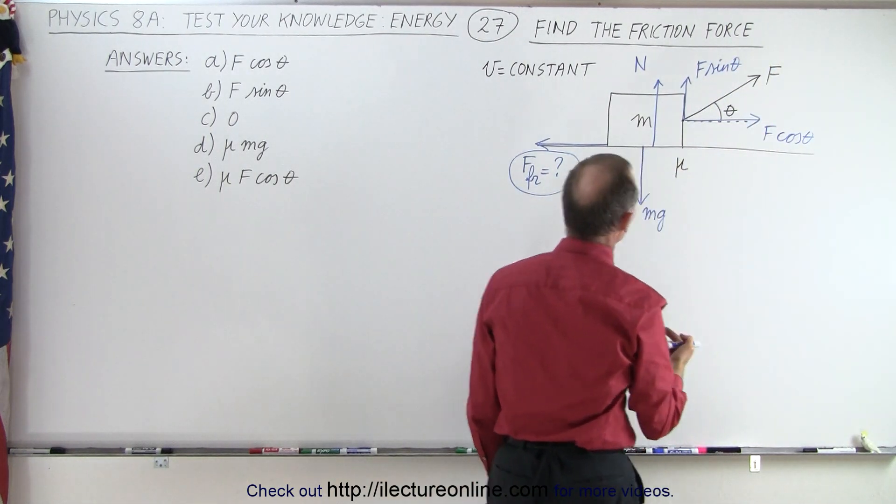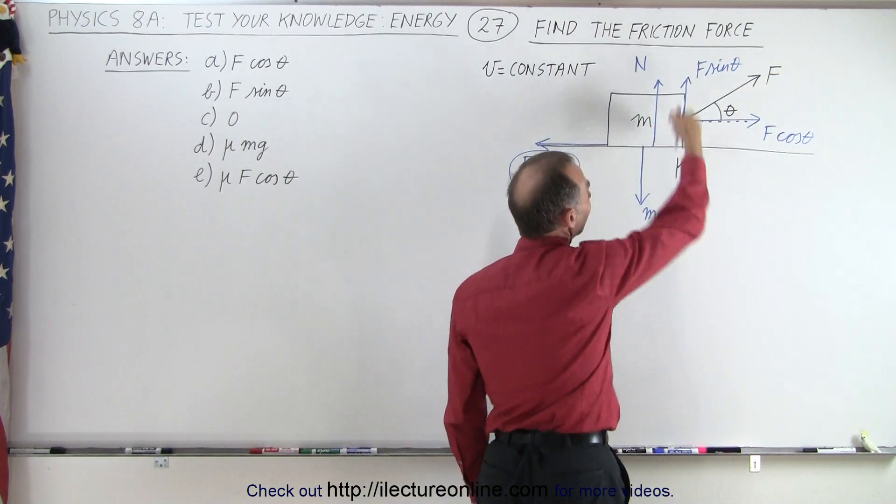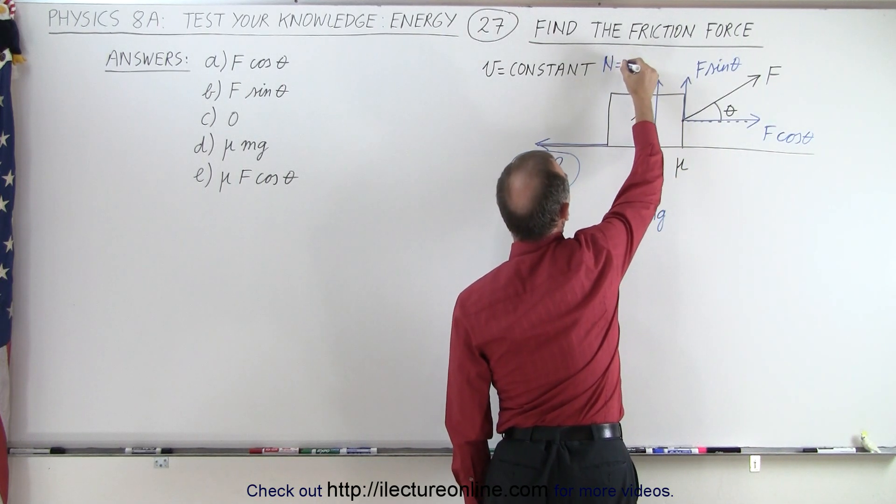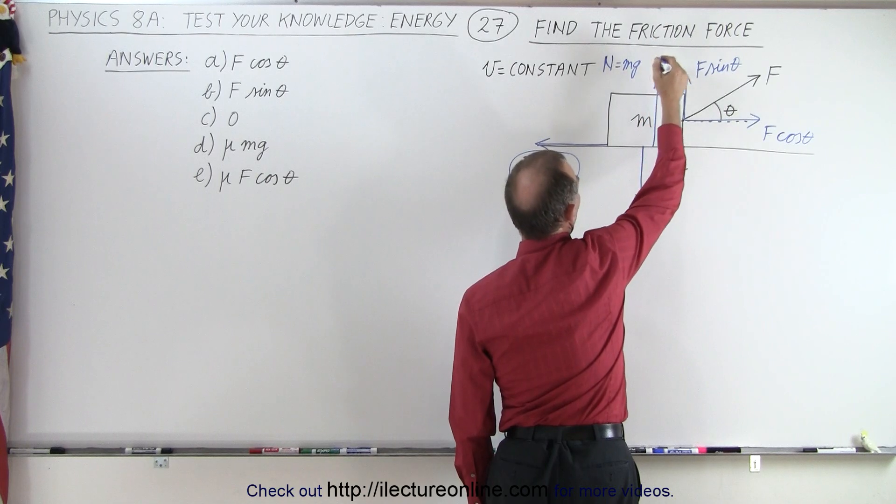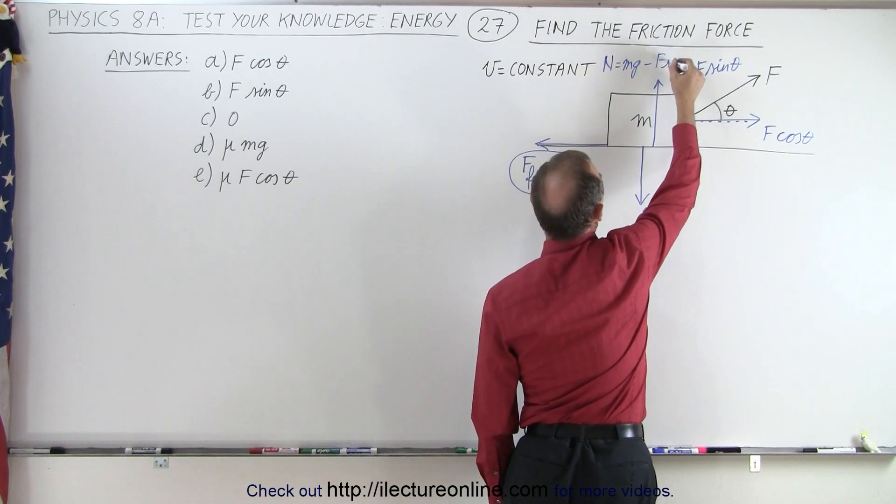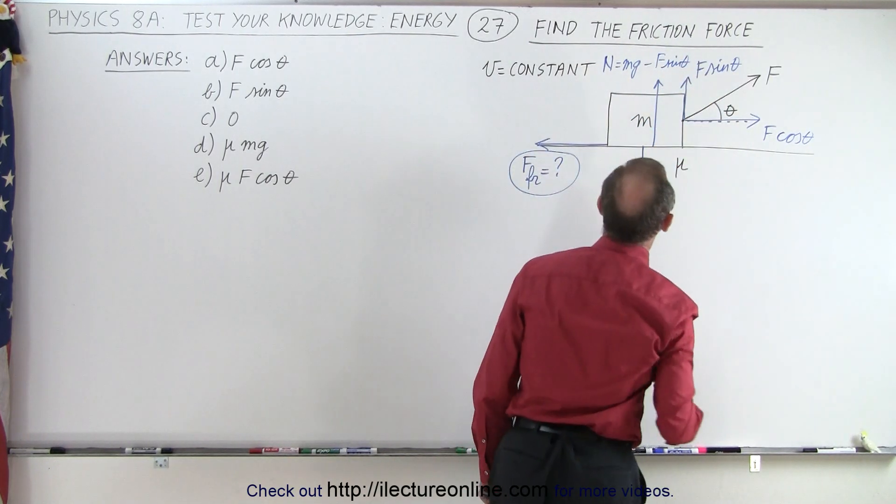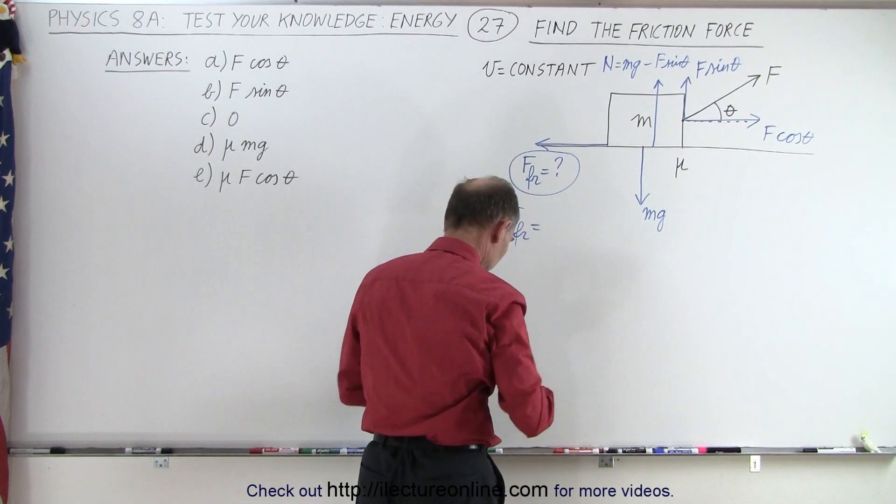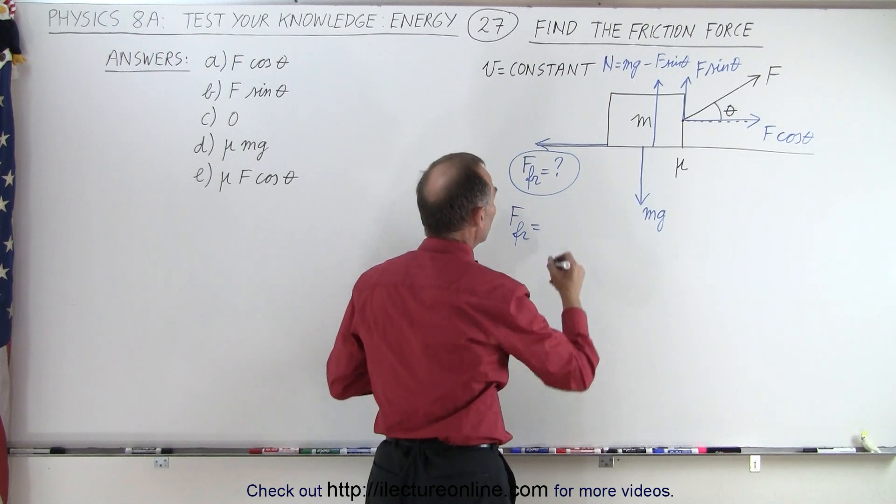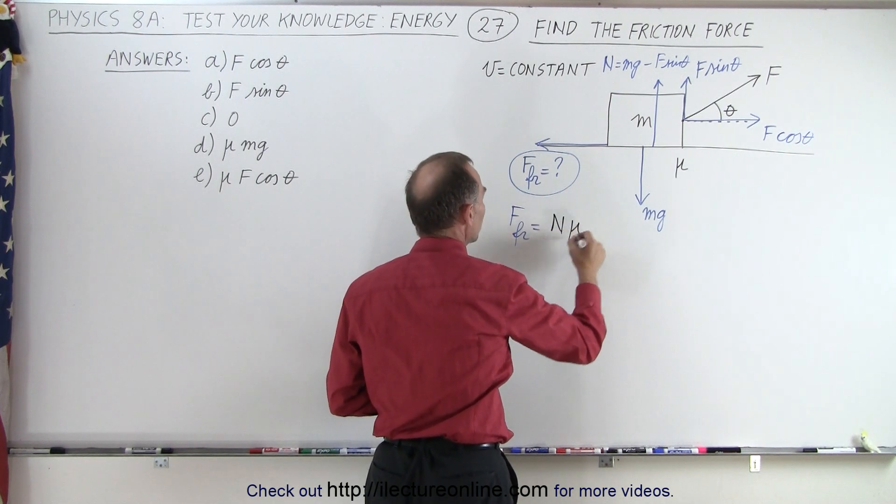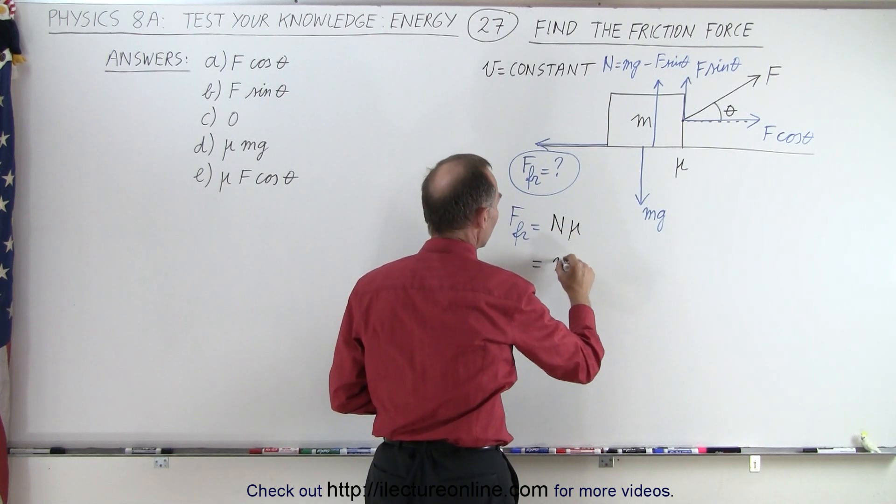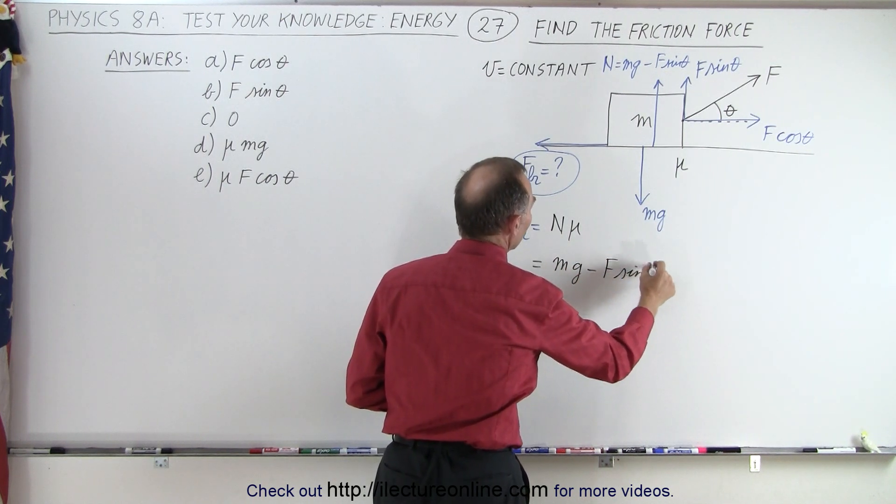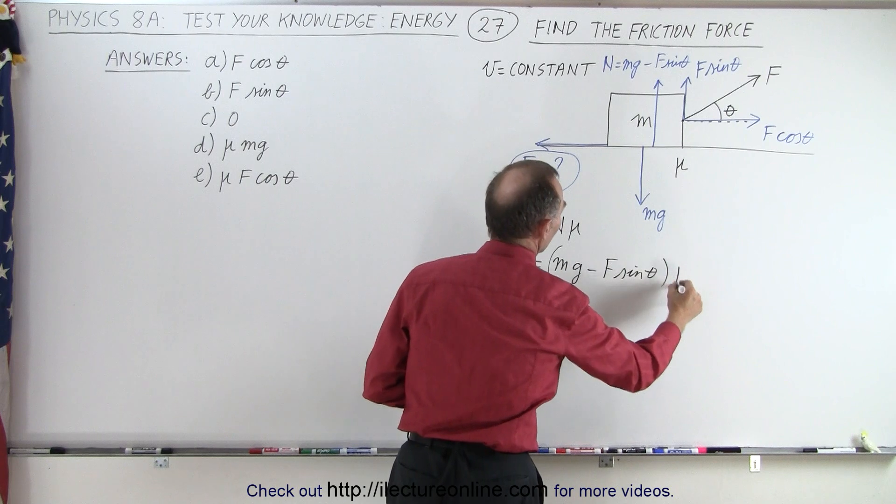And then you'd say well the normal force would be equal to the weight of the block minus the force pulling up on the block. So it means the normal force would be equal to mg minus F sine theta like this. And then you say that the friction force, force friction by definition, and I'll change color here, that would be equal to the normal force times mu. And so that would be equal to mg minus the force F times the sine of theta times mu.